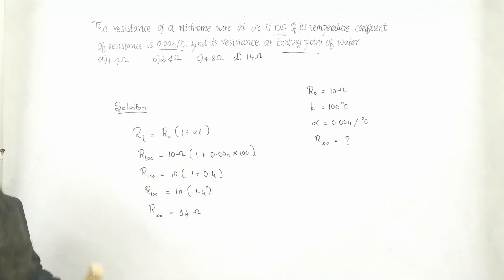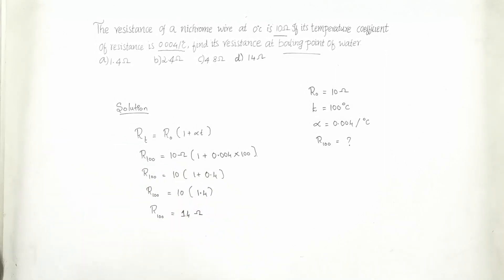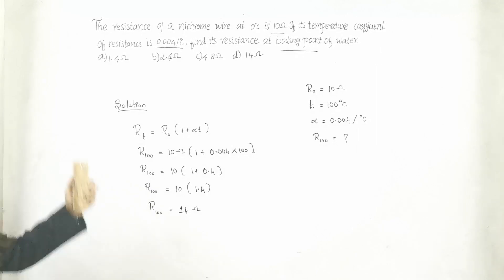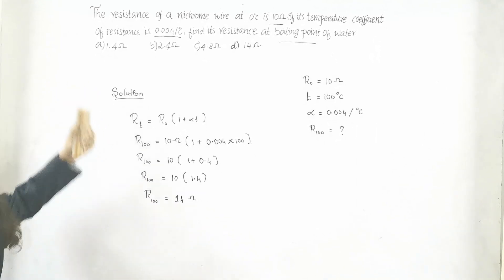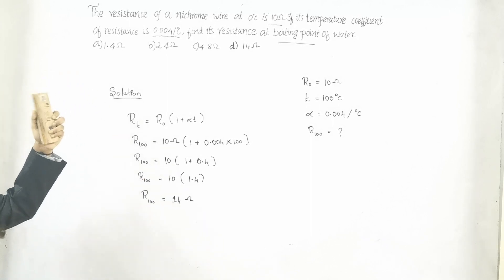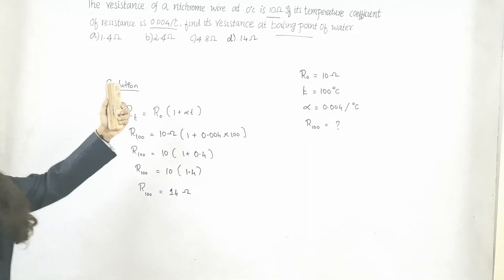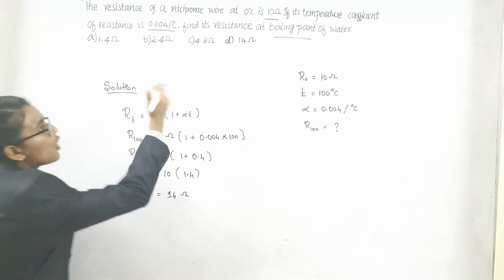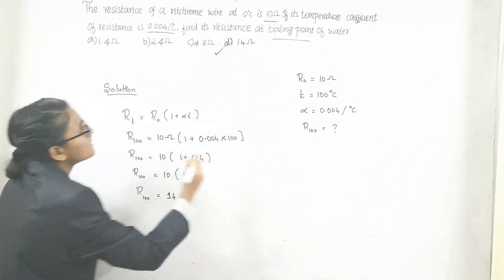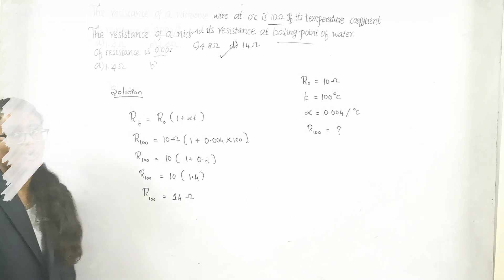Now let us check the answer in the given options. Let me read the given options again. A) 1.4, we have to check with the answer. No, it is 14 ohms and the given answer is 1.4. And B, no, it is not 14 ohms. Then finally, it is option D. Option D is the correct answer. It is 14 ohms.